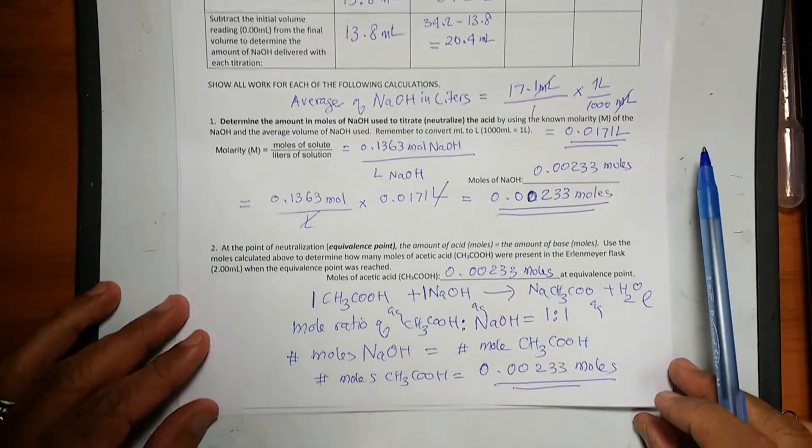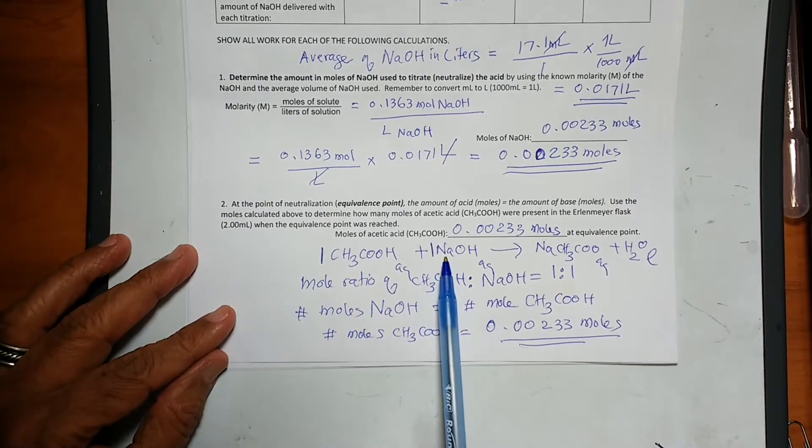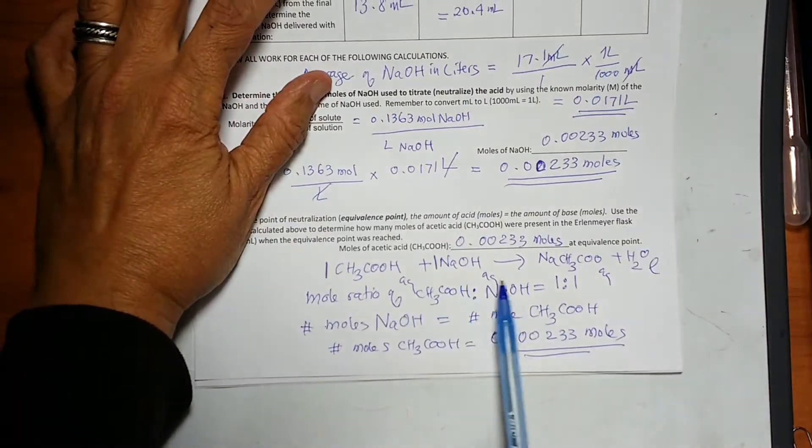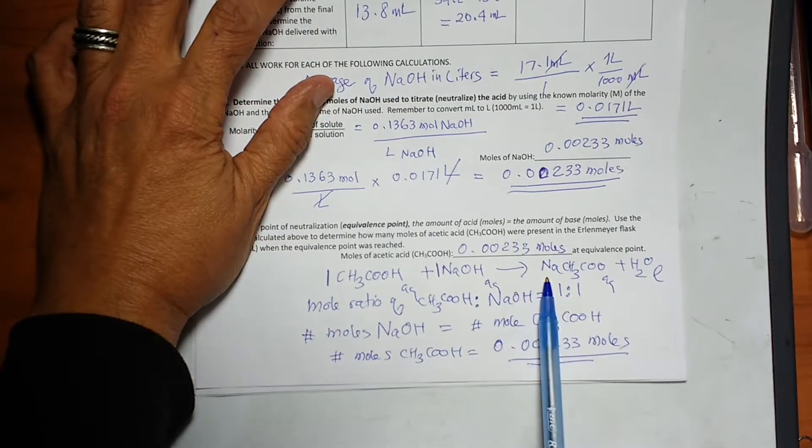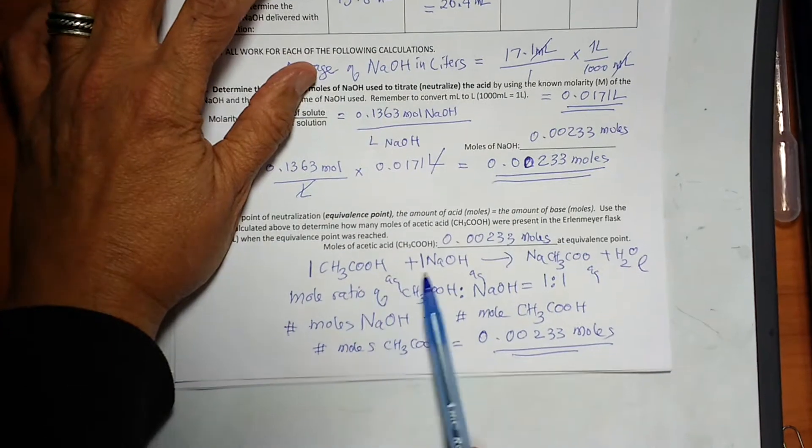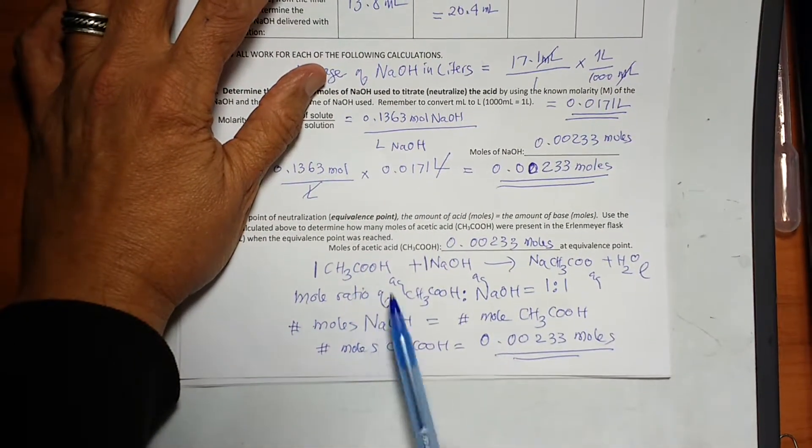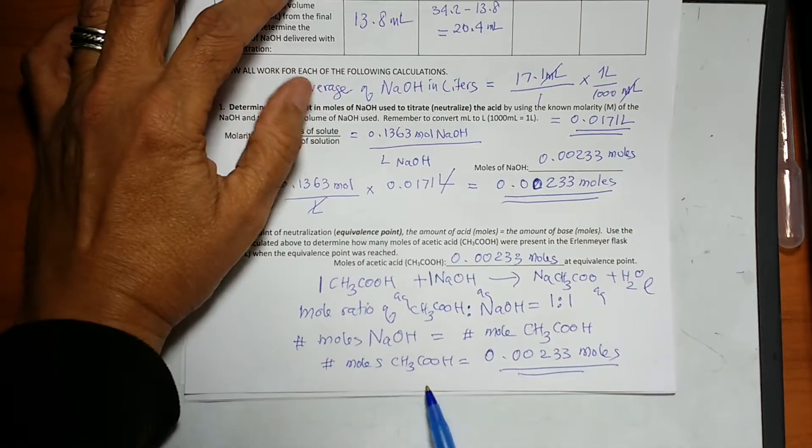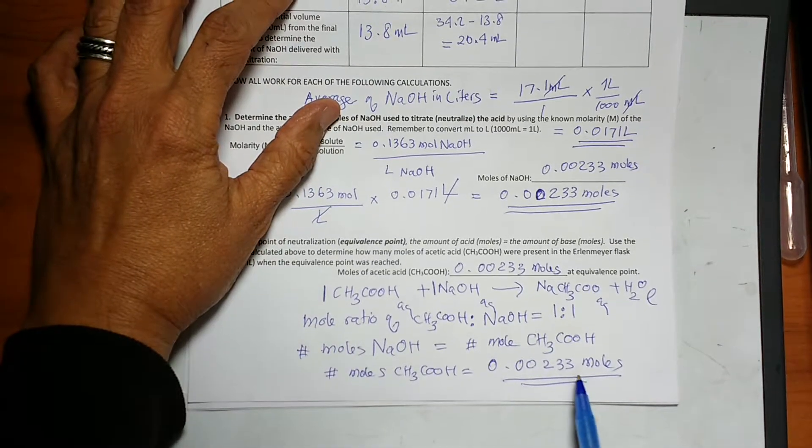Looking at this here, you will see that this is one to one molar ratio of the acid with the base. So I have acetic acid with sodium hydroxide to produce sodium acetate and H2O. One to one molar ratio means moles of sodium hydroxide have to equal moles of acetic acid. Therefore, moles of acetic acid is 0.00233 moles.